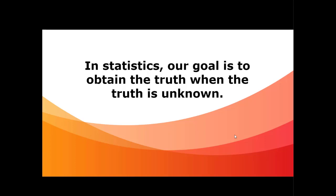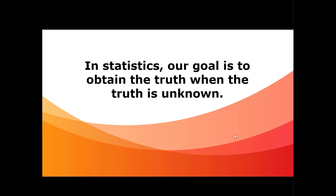We want to control the amount of error from the very beginning so that when we finally make that inference about the population, we can make the cleanest inference possible. We don't want it muddled up with a bunch of what they call noise — errors and things like that.